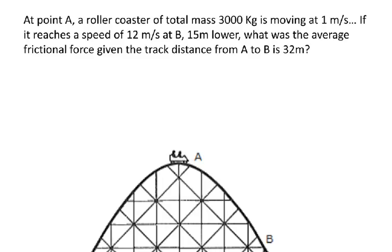So let's have a look at a different problem. At point A, a roller coaster of mass 3000 kilograms is moving at 1 metre per second. If it reaches a speed of 12 metres per second at B, which is 15 metres lower, what is the average frictional force, given that the track distance from A to B is 32 metres?